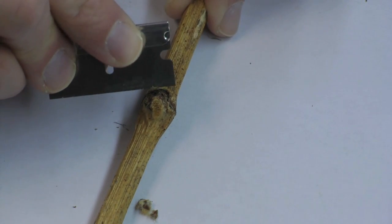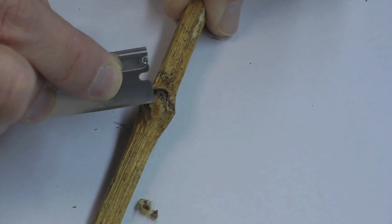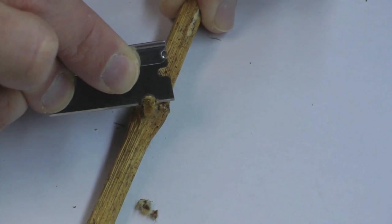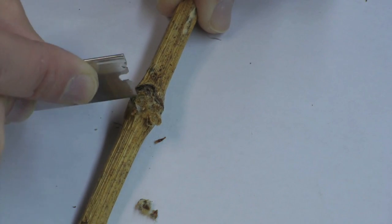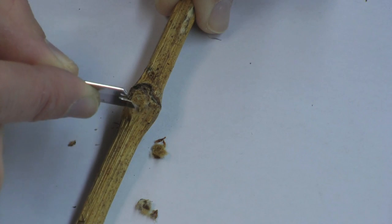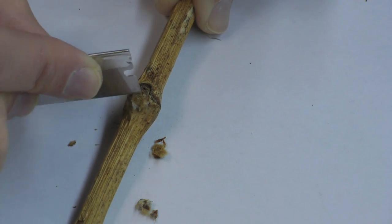So here's a bud that looks like it probably hasn't made it. You can see at the very tip of it, no green showing. As we cut down, there's no green still. This is all, it looks not just brown, but very dried out.